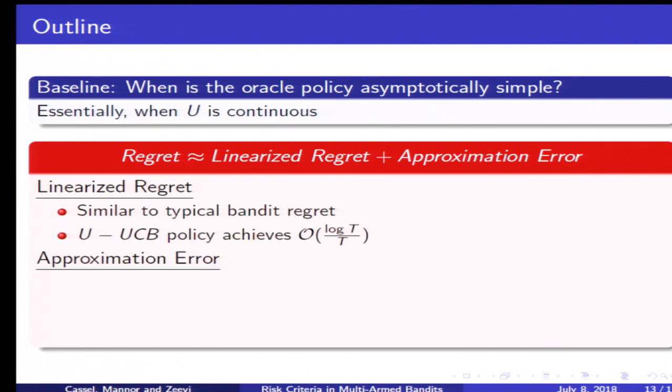On the other hand, the approximation error is a new term which accounts for the non-linearity of this function U. But the good thing about it is that it is nearly independent of the policy—it has some dependence but it is rather weak. If indeed we show that the approximation error is very small, then essentially our UCB policy that minimizes the linearized regret would also provide us with a small actual regret.